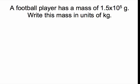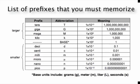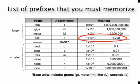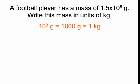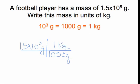Next example: a football player has a mass of 1.5 times 10 to the 5 grams. Write this mass in kilograms. Asking the three questions — kilograms is larger than grams. You need more grams: 10 to the 3, or 1,000 grams equals 1 kilogram. Starting with 1.5 times 10 to the 5 grams, put 1,000 grams on the bottom and 1 kilogram on top. The grams cancel, giving 1.5 times 10 to the 2 kilograms.